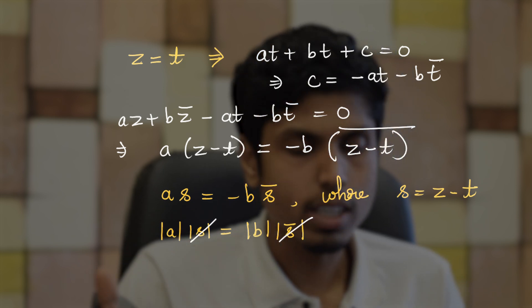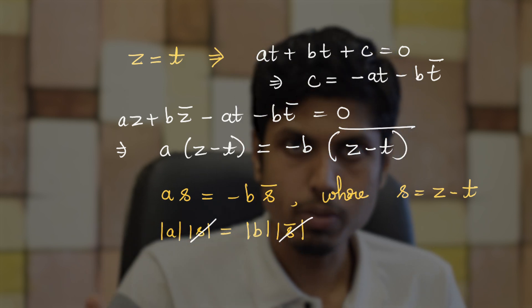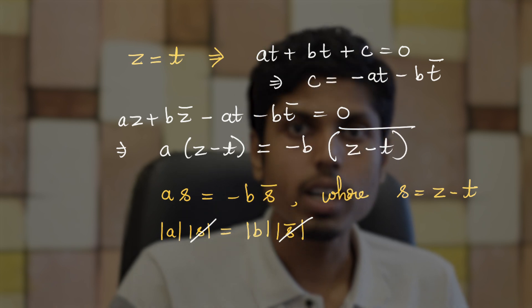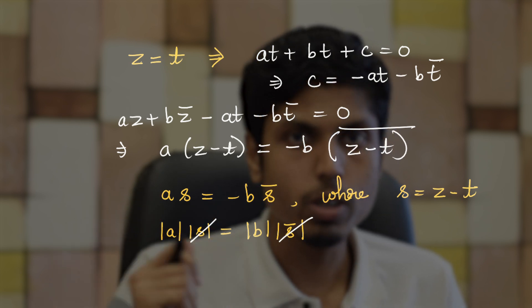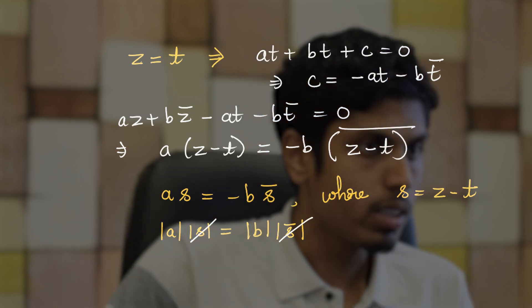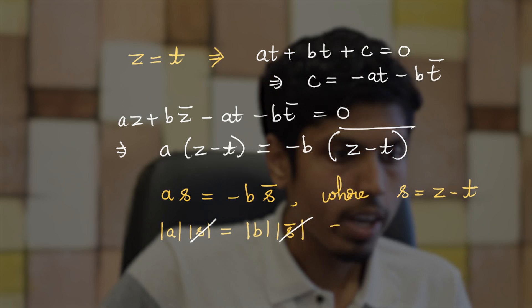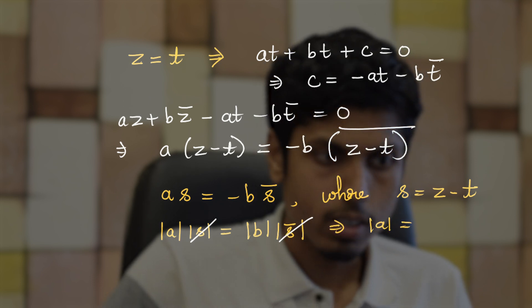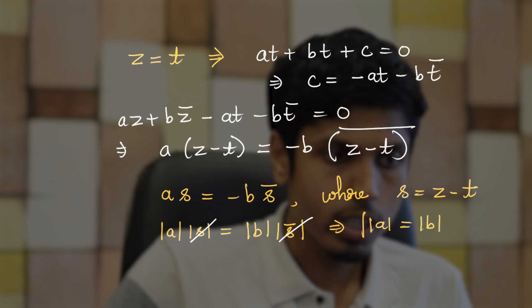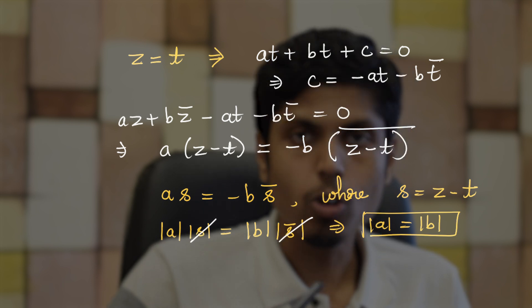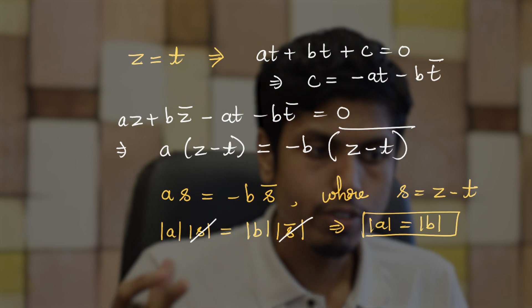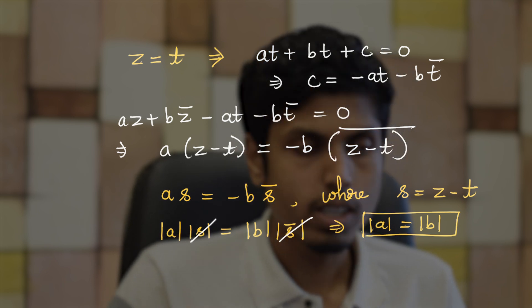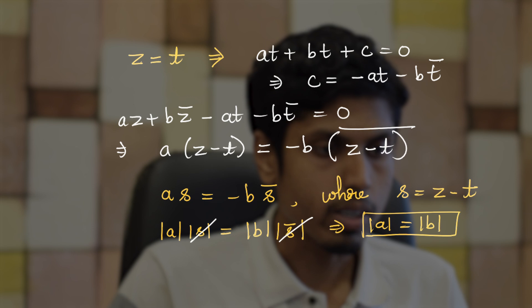If s = x + iy, then s̄ = x − iy, and both have magnitude √(x² + y²). This clearly implies that |a| = |b|, which corresponds to one of the given options. But let's proceed further as there may be more conditions.